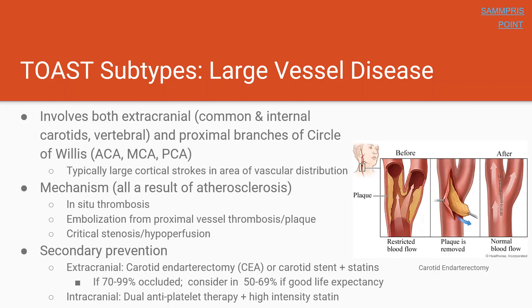TOAST criteria is really nice because it simplifies treatment based on category, and here there are two different approaches depending on whether it's intracranial or extracranial disease. Extracranial disease, which refers to the carotids, is treated surgically with either carotid endarterectomy or carotid stenting. Patients are candidates if they have greater than 70% occlusion of the carotids, and we'll treat many patients with 50 to 69% occlusion if they have a good life expectancy.